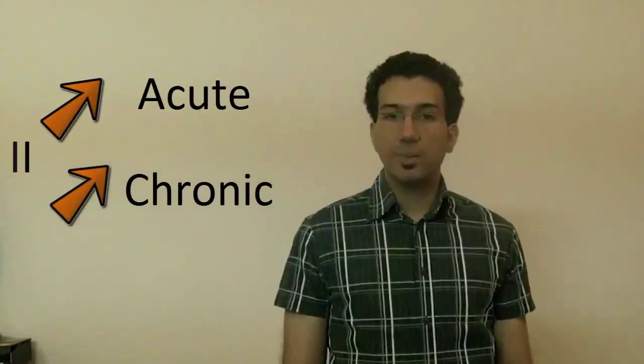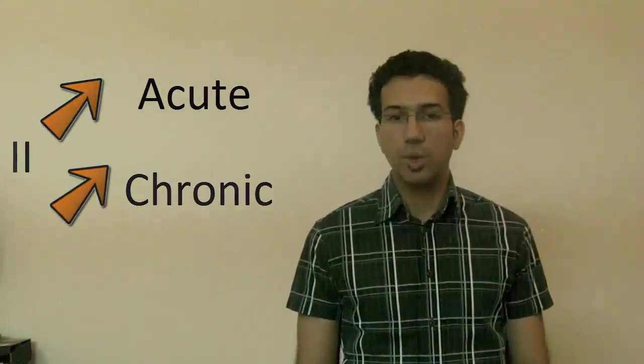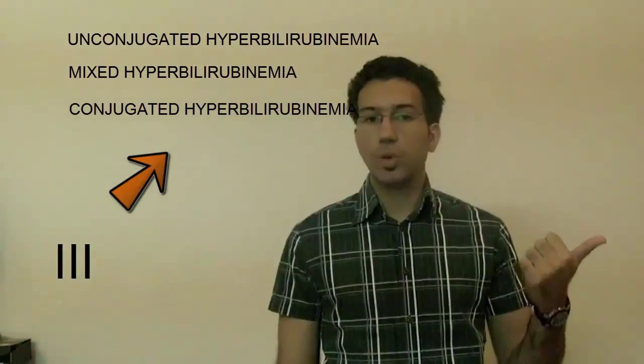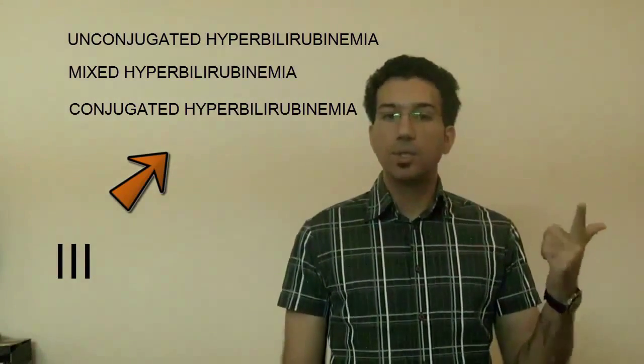Based on its debut and clinical evolution, Jaundice can be acute or chronic. As for based on conjugated bilirubin fractionation, it can be unconjugated hyperbilirubinemia, which is conjugated bilirubin of less than 20% of the total bilirubin.